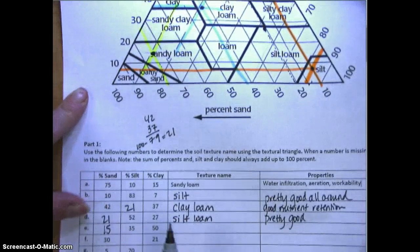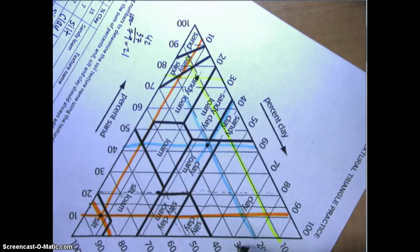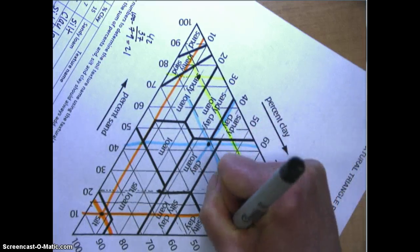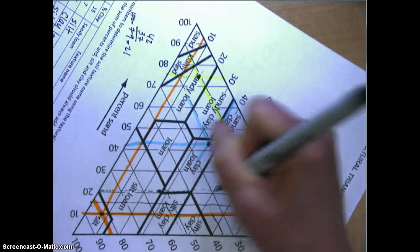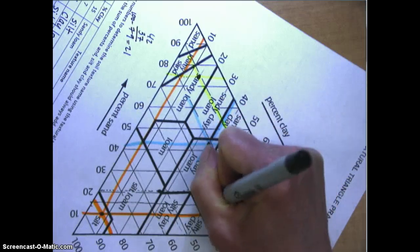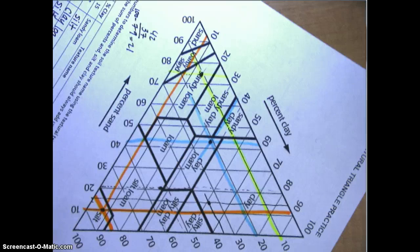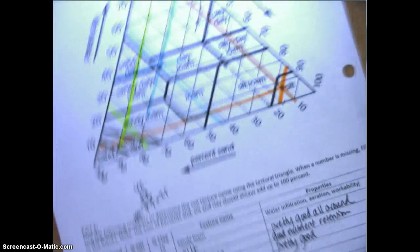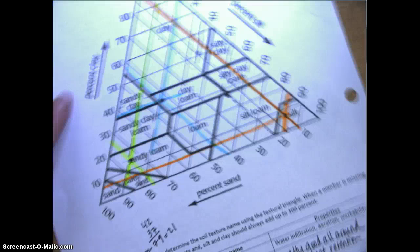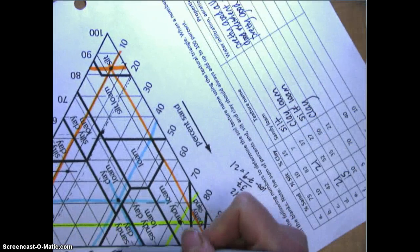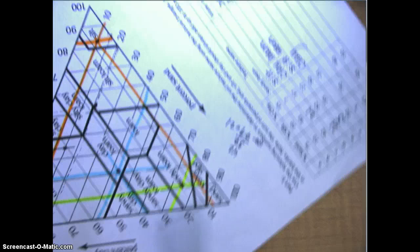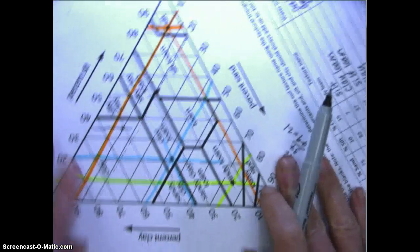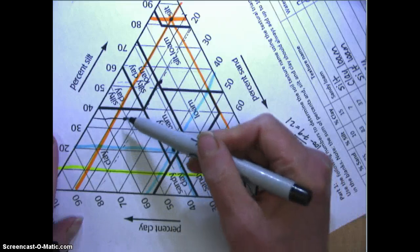Then I have 35% silt, so I'm going to turn to silt. Here's 20, here's 35, and this would be it right here. So we would call that a clay. If you want to double check to make sure that it's 50% clay, here's the clay, here's 50, so it would be about right there.